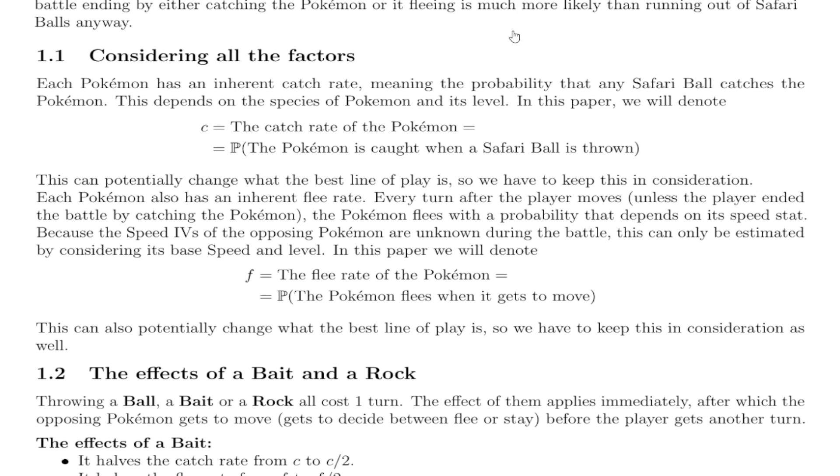So every Pokemon has a base catch rate sort of thing. You can actually look up a calculator called, I believe it's on the Dragonfly Cave website. Essentially Gen 5 catching calculator. There are catching probability differences between generations. So make sure you're using Gen 5.